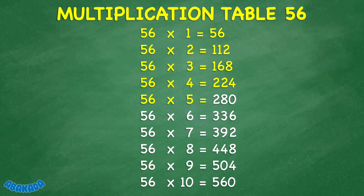56 times 5 equals 280. 56 times 6 equals 336. 56 times 7 equals 392. 56 times 8 equals 448. 56 times 9 equals 504. 56 times 10 equals 560.